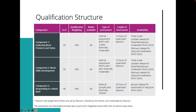The qualification is structured with three components — components one, two and three — designed to be delivered in order. Component three is a synoptic unit that pulls together all the teaching and learning from the first two units. The guided learning hours are shown in the first column. The qualification weighting is 30% for each internal unit and 40% for the external unit. All are marked out of 60 marks — it's no longer pass, merit and distinction. We have marks out of 60 for each unit.